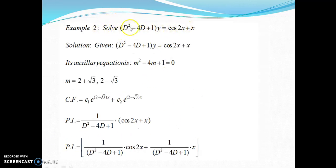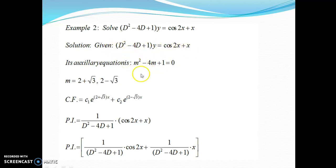If that example is clear, let us take a combination. The second example is a combination of rule number two and rule three, because sometimes in examinations the problem is a combination of rules — sometimes rules two and three like this example, sometimes one and two, sometimes one and three. The equation is: (D² − 4D + 1)y = cos 2x + x. Write the auxiliary equation by putting D = m: m² − 4m + 1 = 0, giving m = 2 ± √3.